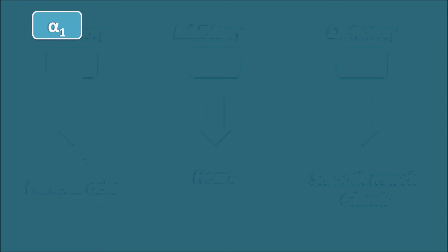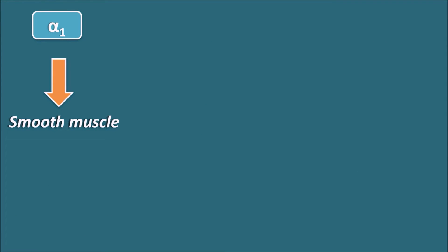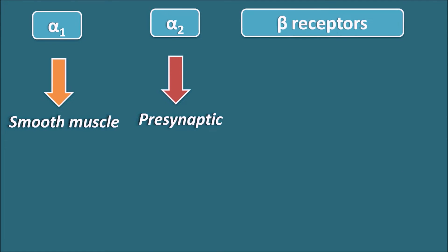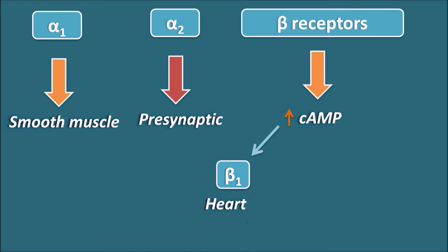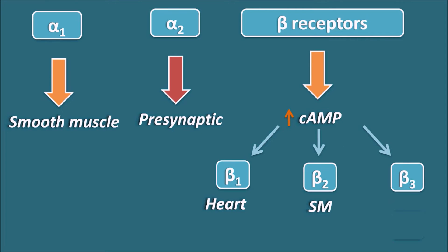For adrenergic receptors: alpha-1 receptors are present mainly on smooth muscle, particularly abundant on vascular smooth muscle. Alpha-2 receptors are mainly presynaptic. Beta receptors are coupled with increased cyclic AMP. Beta-1 receptors are present on the heart, beta-2 receptors on smooth muscle, and beta-3 receptors on adipose tissue. These are the primary targets of adrenergic receptors.